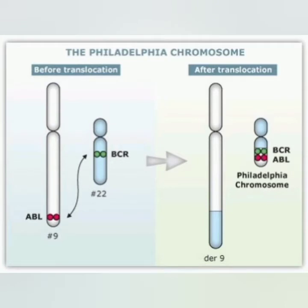CML is the best example of reciprocal translocation — specifically a translocation between chromosome 9 and chromosome 22. The ABL gene (Abelson) is present on chromosome 9, and the BCR gene (breakpoint cluster region) is present on chromosome 22.